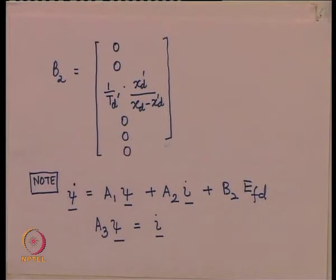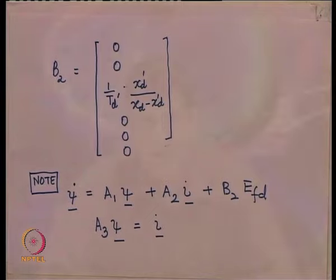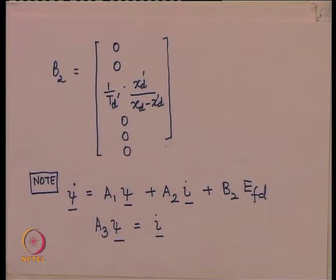If you look at the synchronous machine equations — just the flux equations, since we are not considering the mechanical or torque equations — the flux equations are in fact linear. These transients can be studied by simple linear system analysis using eigenvalues and eigenvectors, and the complete response can be characterized and plotted. We do not need numerical integration because this is a linear system and the response comes out in a nice closed form. The matrices A1, A2, B2 will be constant matrices.